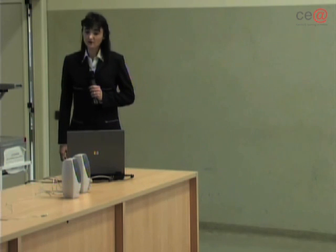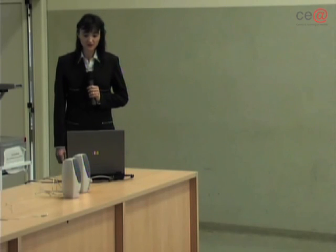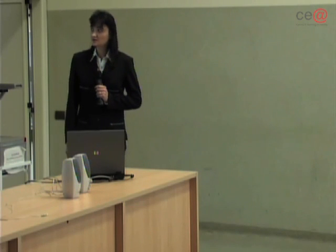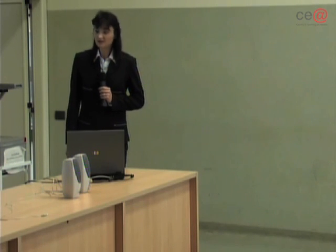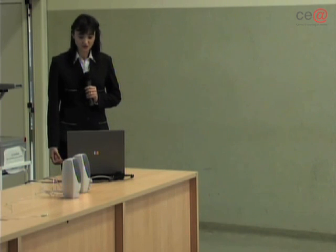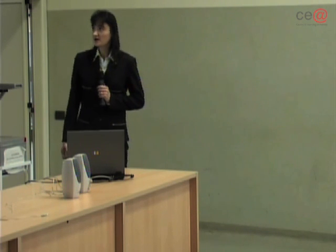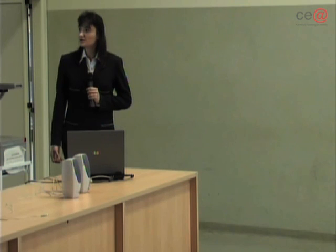In the second part of the last year I mainly worked with Professor Danasi on compensator design. In the block diagram, G(s) represents the original system — the system to be controlled — and C(s) represents the compensator to be designed so that the overall control system has the desired behavior.